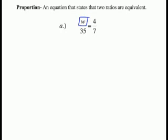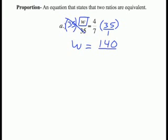Because we're dividing W by 35, to undo division we must multiply both sides by 35. On the left side, the 35s cancel each other out, and we're left with W equals. Now we're multiplying a fraction times a whole number, so to turn that whole number into a fraction, we write it over 1. Now we multiply straight across the top. We have 4 times 35, which equals 140, and on the bottom we have 7 times 1, which equals 7. 140 divided by 7 equals 20. So W equals 20.